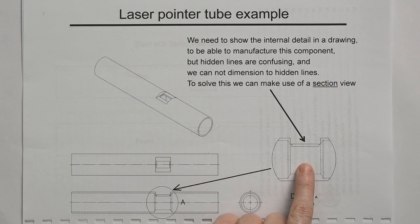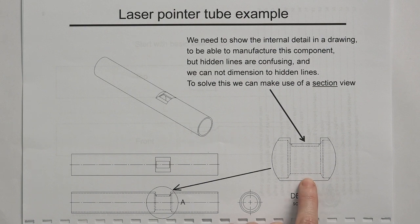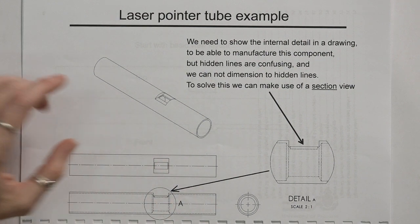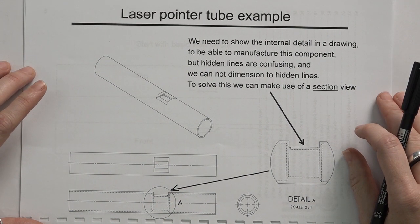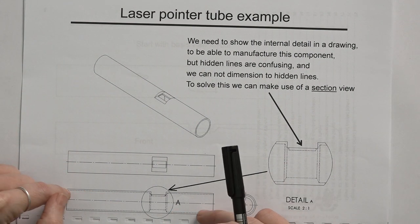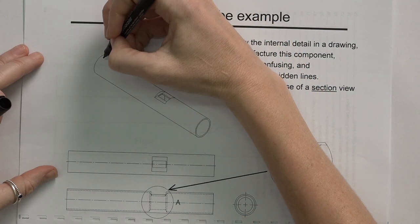That's just an enlargement so you can see what is happening on the inside of that section. And then we have a right view from this angle. Now the point of hidden detail is to show what's happening on the inside.